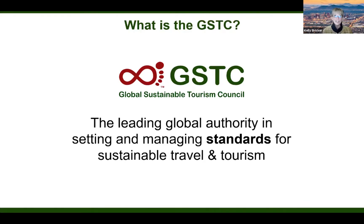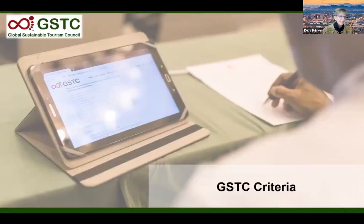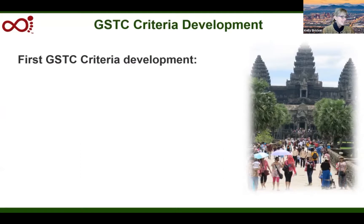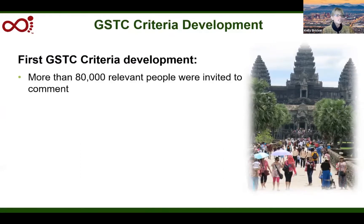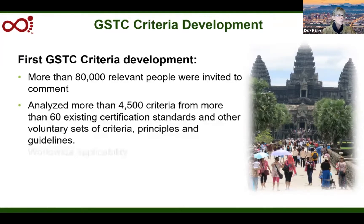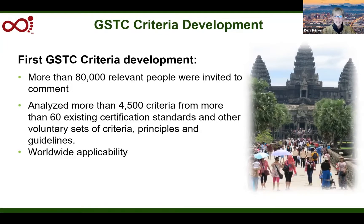What I'd like to do is give you a short intro into what is the Global Sustainable Tourism Council. In 2007, a coalition of 32 partners initiated by the Rainforest Alliance, the United Nations Environmental Program, the United Nations Foundation, and the United Nations World Tourism Organization created the GSTC. The purpose was to foster increased understanding of sustainable tourism practices and the adoption of universal sustainable tourism principles.